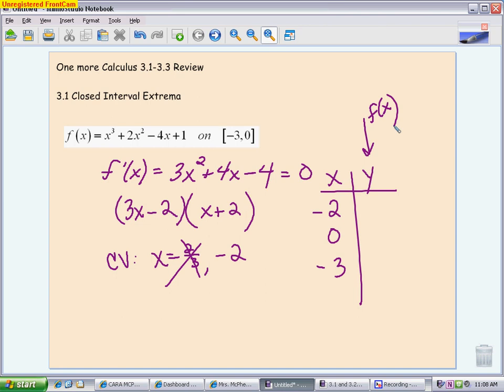When you put negative 2 into the original function, whether you do it in your head or with a calculator, you get 9. When you put 0 into the original function, you get 1. And when you put negative 3 into the original function, you get 4.